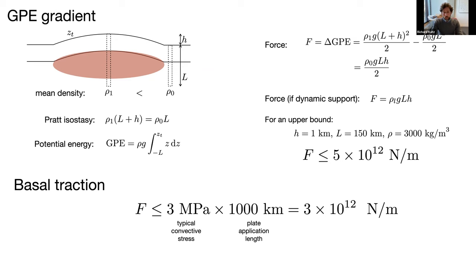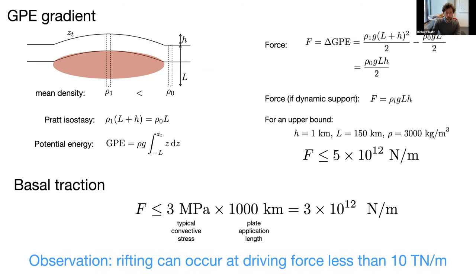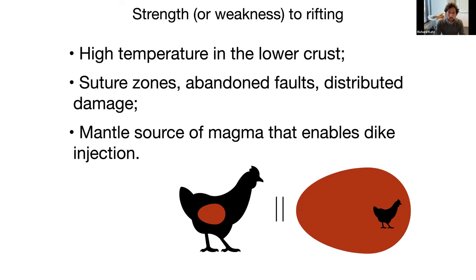Rifting can occur at driving forces of less than 10 teranewtons per meter. So it seems like we can't expect all rifts to have the large stresses associated with subduction zones.